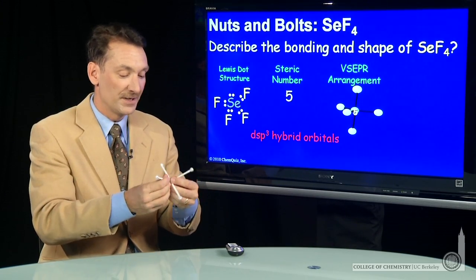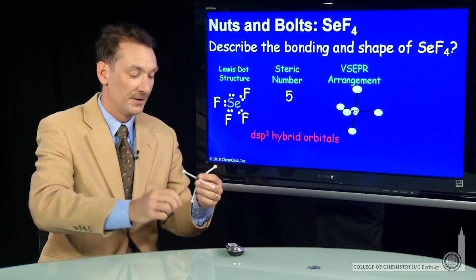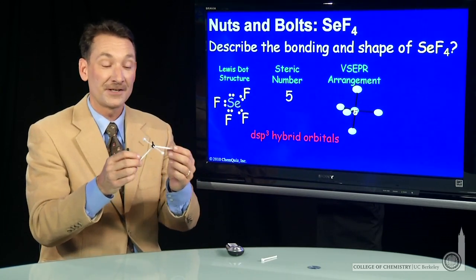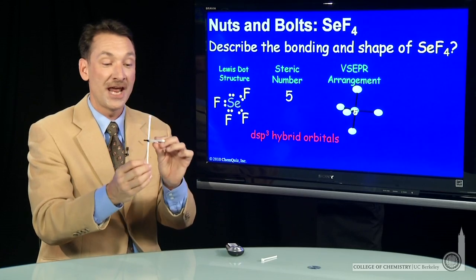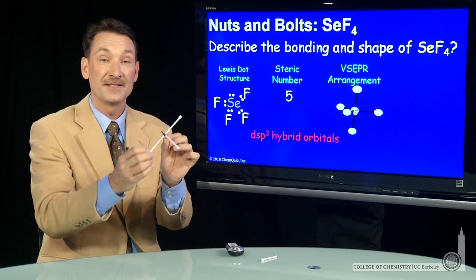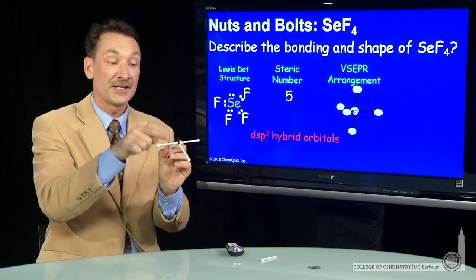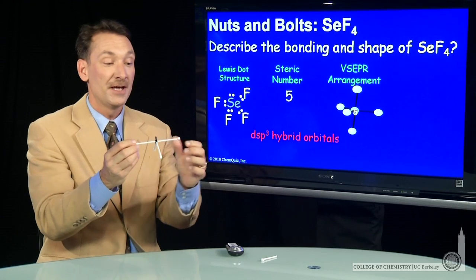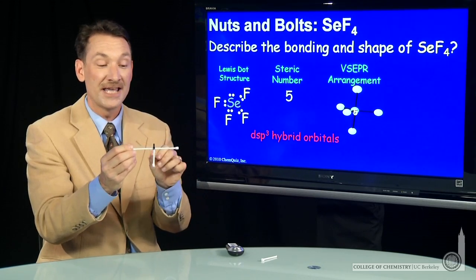So we always name our shapes without the electron pair. So removing that electron pair gives me a shape that looks like this, a little seesaw. So there's an electron pair here, but the molecular shape is named just by the atoms.